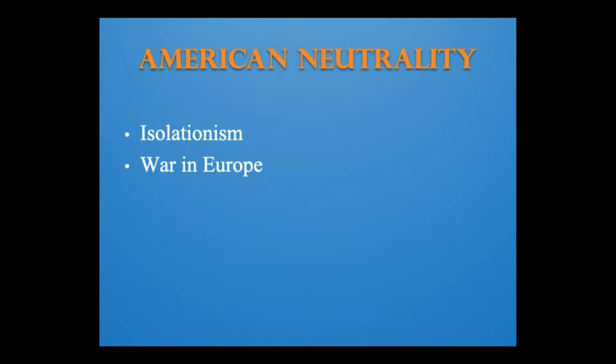Even though the Spanish Civil War was a conflict between a democratic republic and a fascist dictator, the United States and other governments imposed an arms embargo on both sides, effectively allowing Germany and Italy to help Franco overwhelm Spanish government forces. At Munich in 1938, Britain and France capitulated to Hitler's aggression. In 1939, the Soviet Union proposed an international agreement to oppose further German demands for territory, but Britain and France, distrusting Stalin and seeing Germany as a fortress that would check communist power in Europe, declined. Stalin soon signed a non-aggression pact with Hitler, his former enemy.